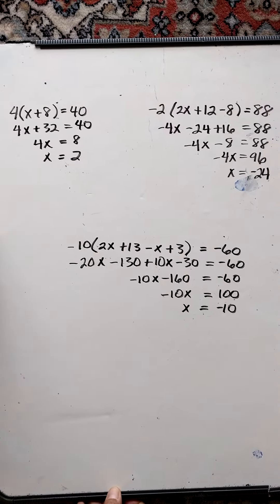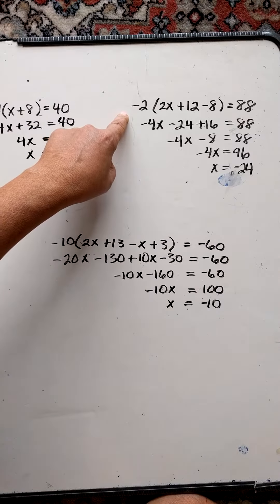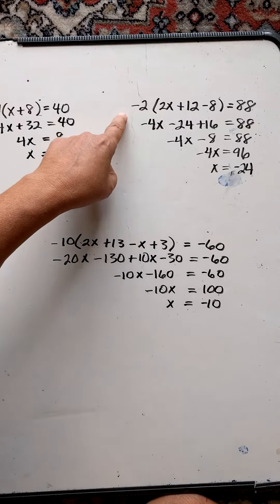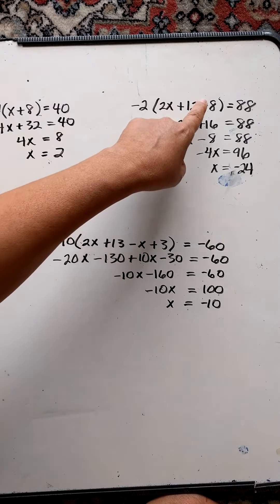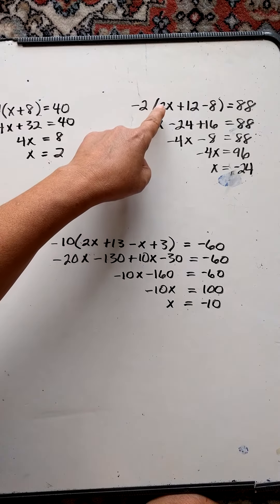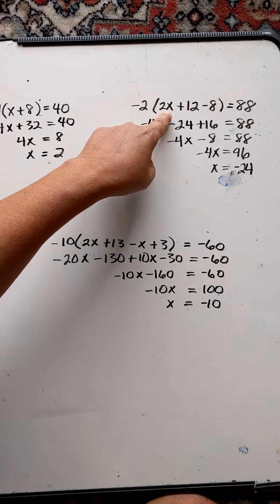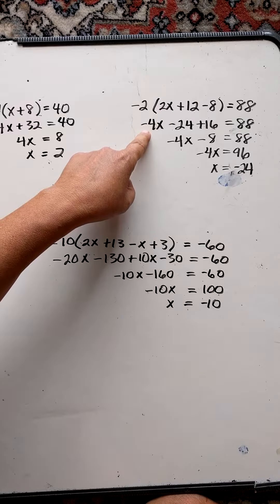This next example, we're distributing a negative 2 to each term. Again, one thing I do is I just flip all these signs, and just making sure I watch for the first one. So negative 2 times 2x is negative 4x.